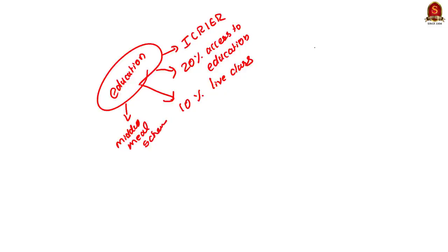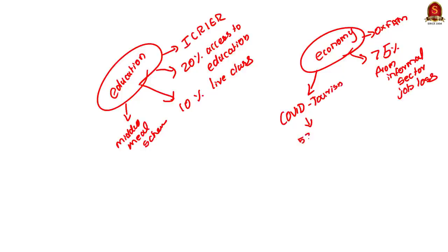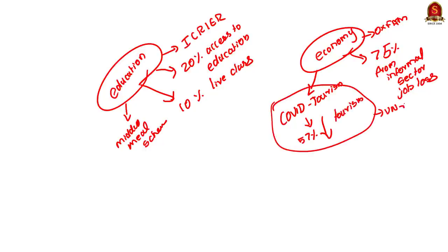For inequality between the formal and informal economy, you can mention the same Oxfam report, which highlighted that of the 122 million job losses that occurred due to the pandemic, 75% were from the informal sector. You can also cite the UN report titled 'COVID-19 and Tourism' from our July 1st session, which mentioned that India saw a 57% fall in tourist arrivals. Since most of India's tourism sector falls within the informal sector, we can link this data to show how the fall in income in the tourism sector accelerated the class divide.